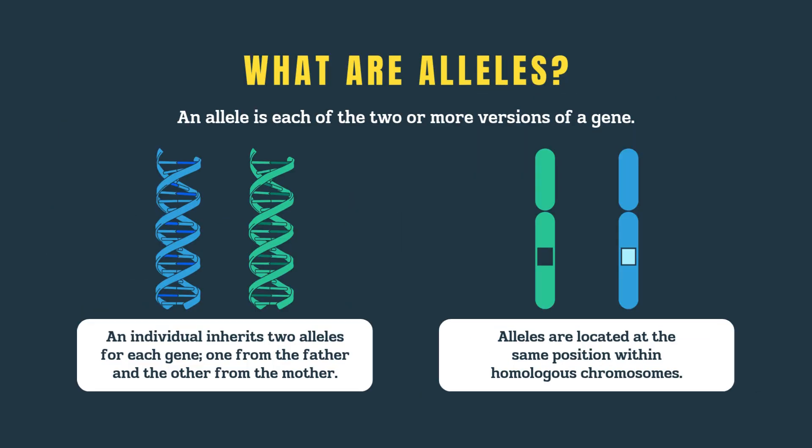So, what are alleles? Think of a gene as a recipe, and alleles as different versions of that recipe. Each person inherits two alleles for every gene — one from their mother, and one from their father. These alleles are found at the same position on a pair of homologous chromosomes, chromosomes that match in size and structure. Sometimes the alleles are the same, like two identical recipes. Other times they're different, like one for curly hair and one for straight. The combination you inherit determines how a trait is expressed.